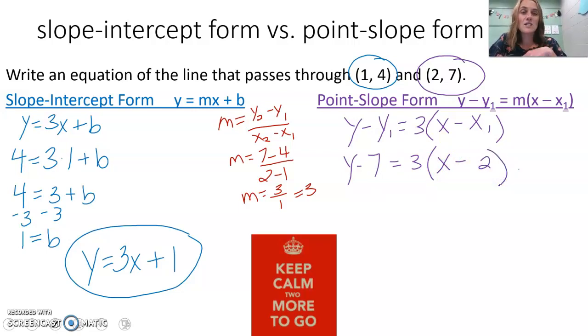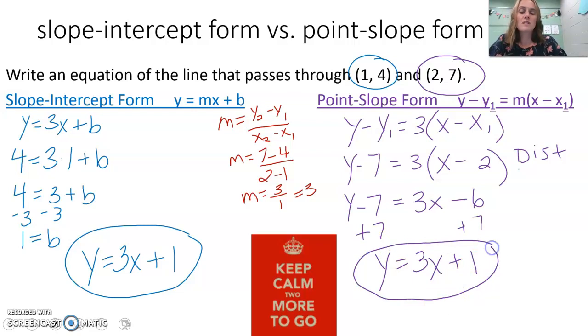Now we want to rewrite this into slope-intercept form because that's our standard form. First, I'll simplify by distributing. y - 7 = 3x - 6. Then I'll get y by itself by adding 7 to both sides, because -7 + 7 would be 0. We have y = 3x + 1.